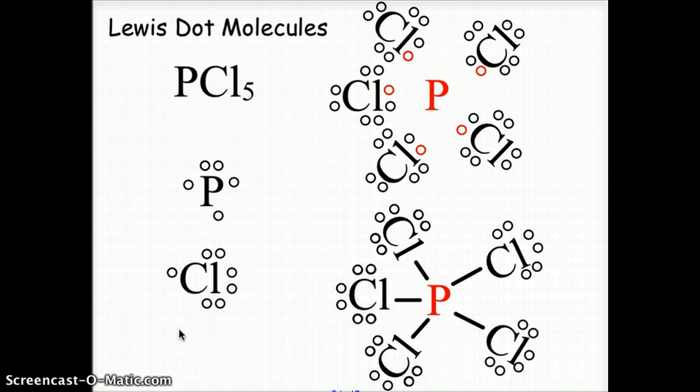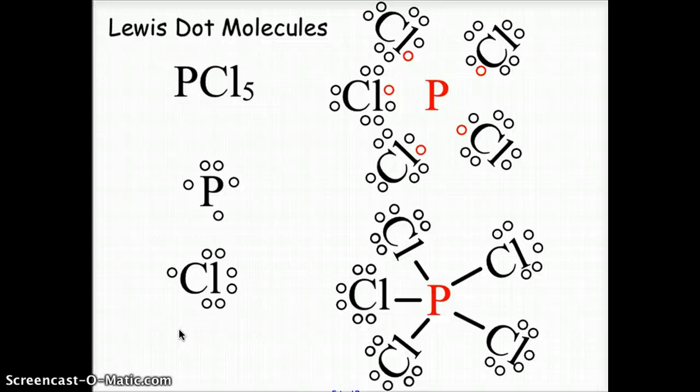And we end up with phosphorus with single bonds to five different chlorines. This can also happen with bromine, fluorine, or any of the halogens. And this can also happen with nitrogen and phosphorus and any of the cases where you have S2P3 as the electron orbital arrangement.